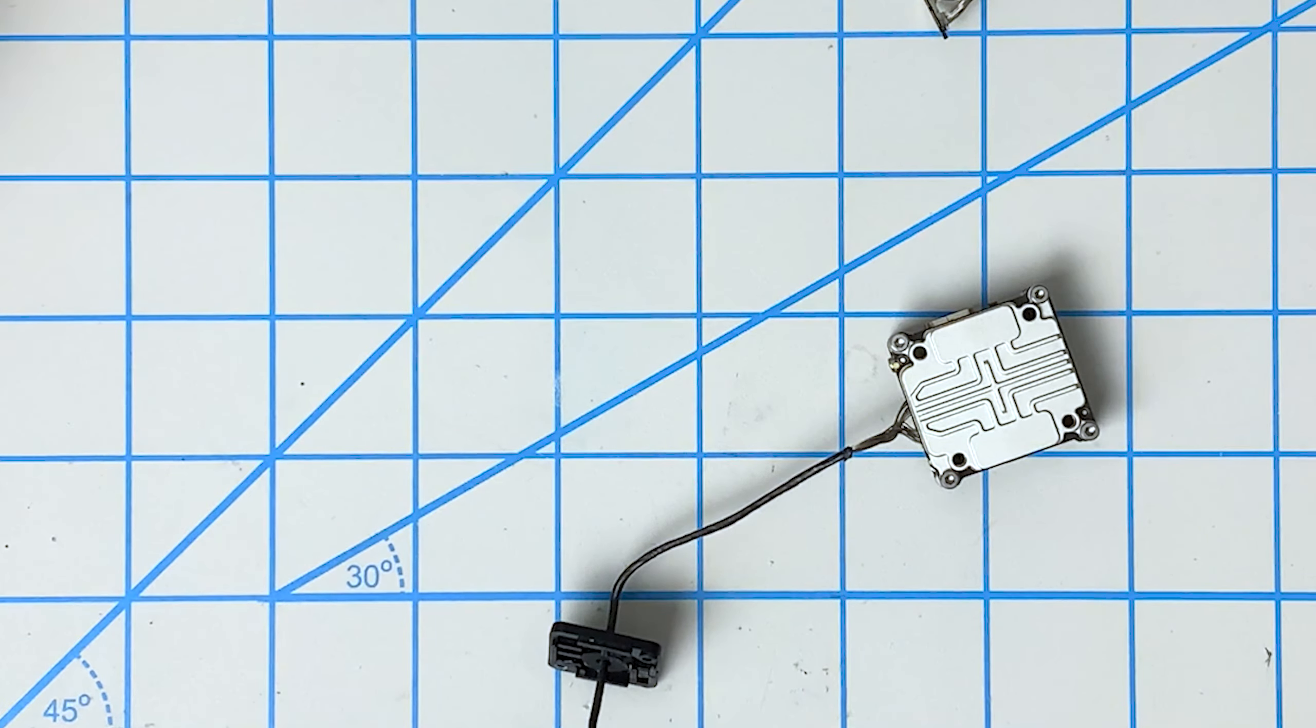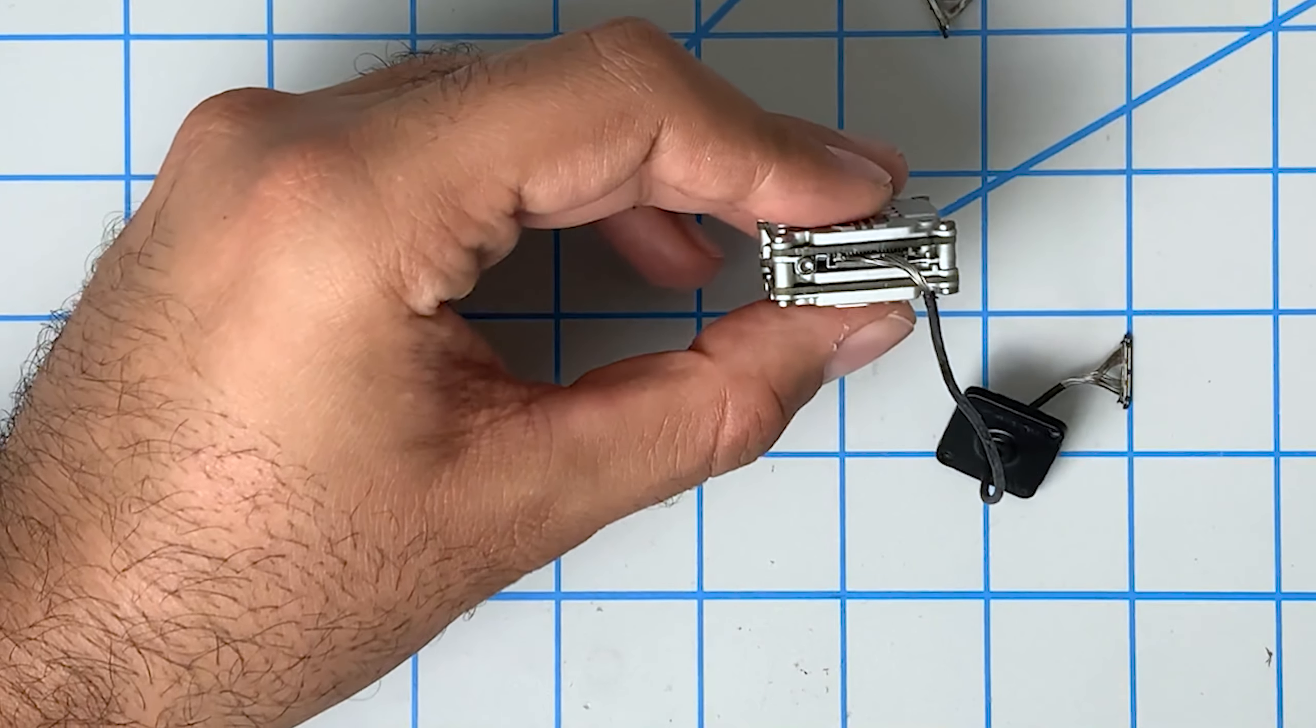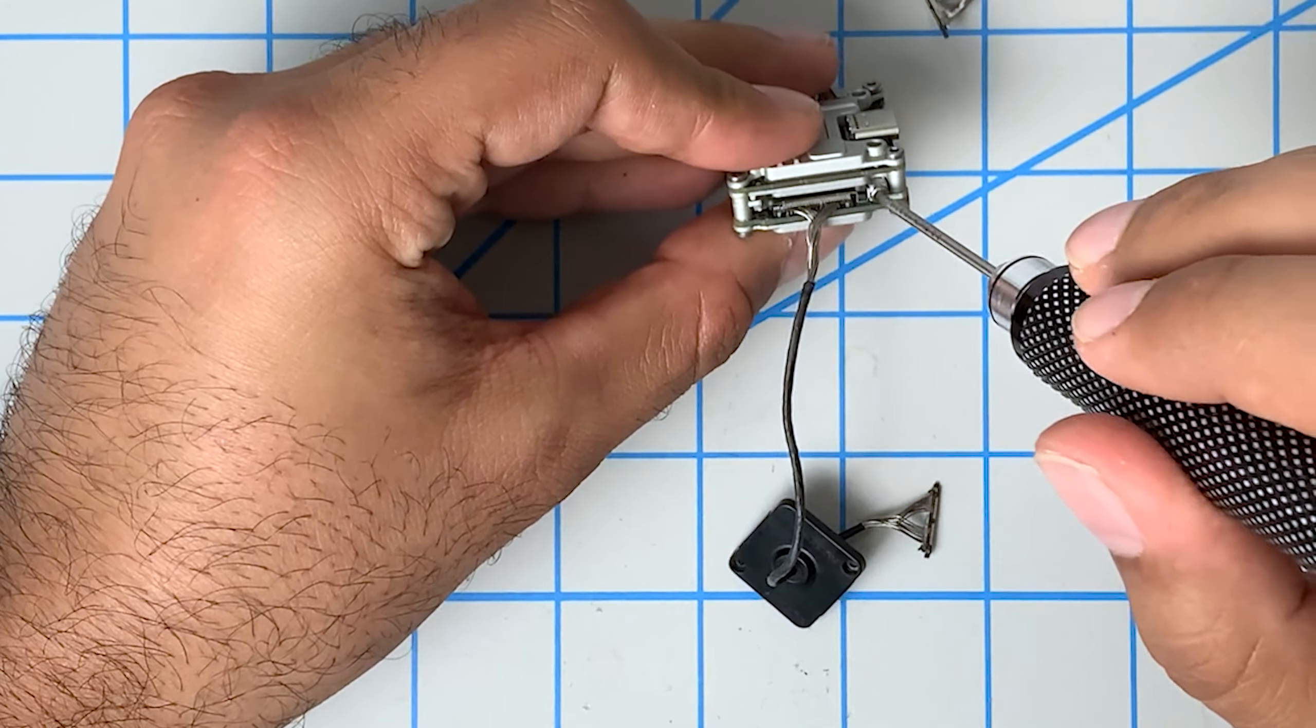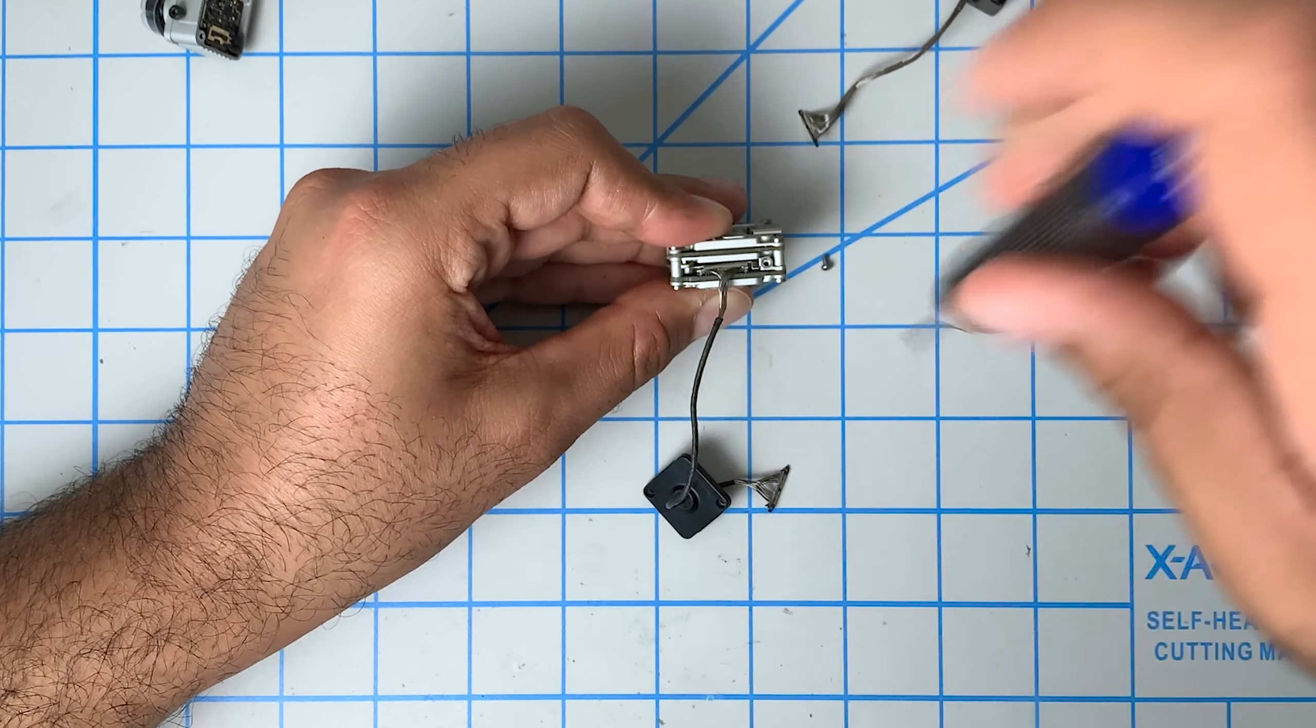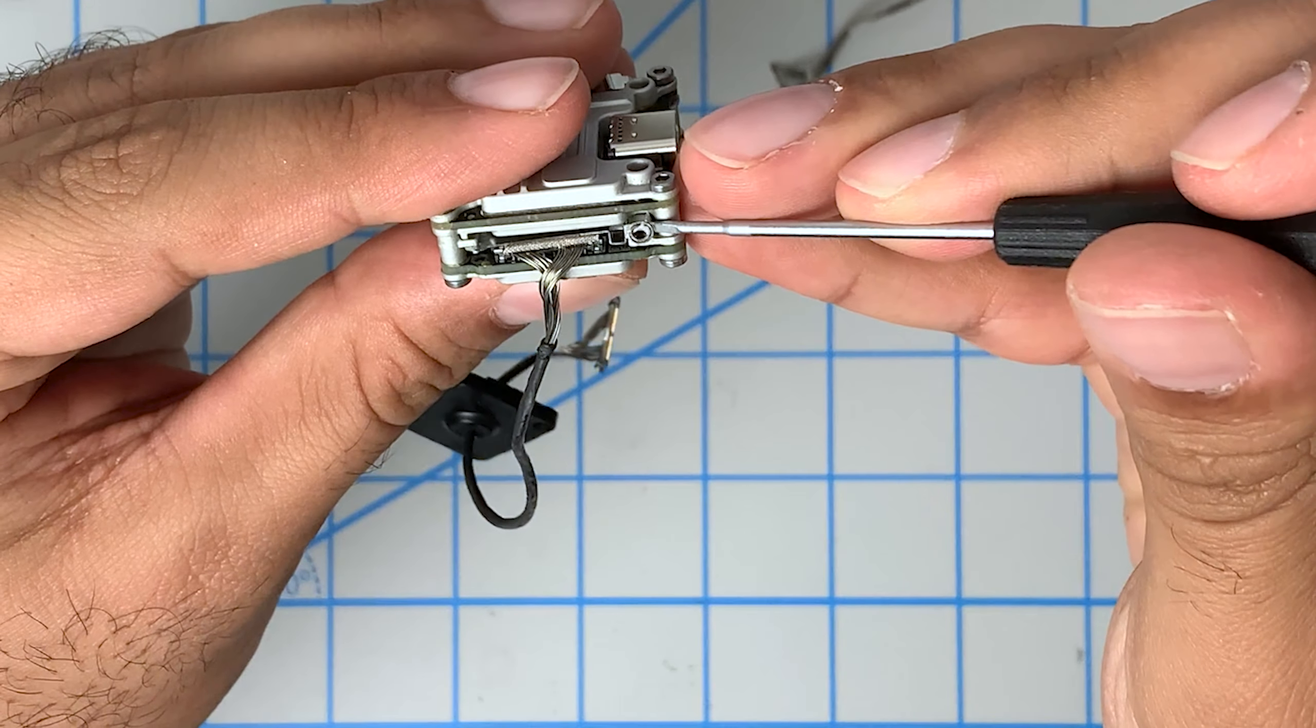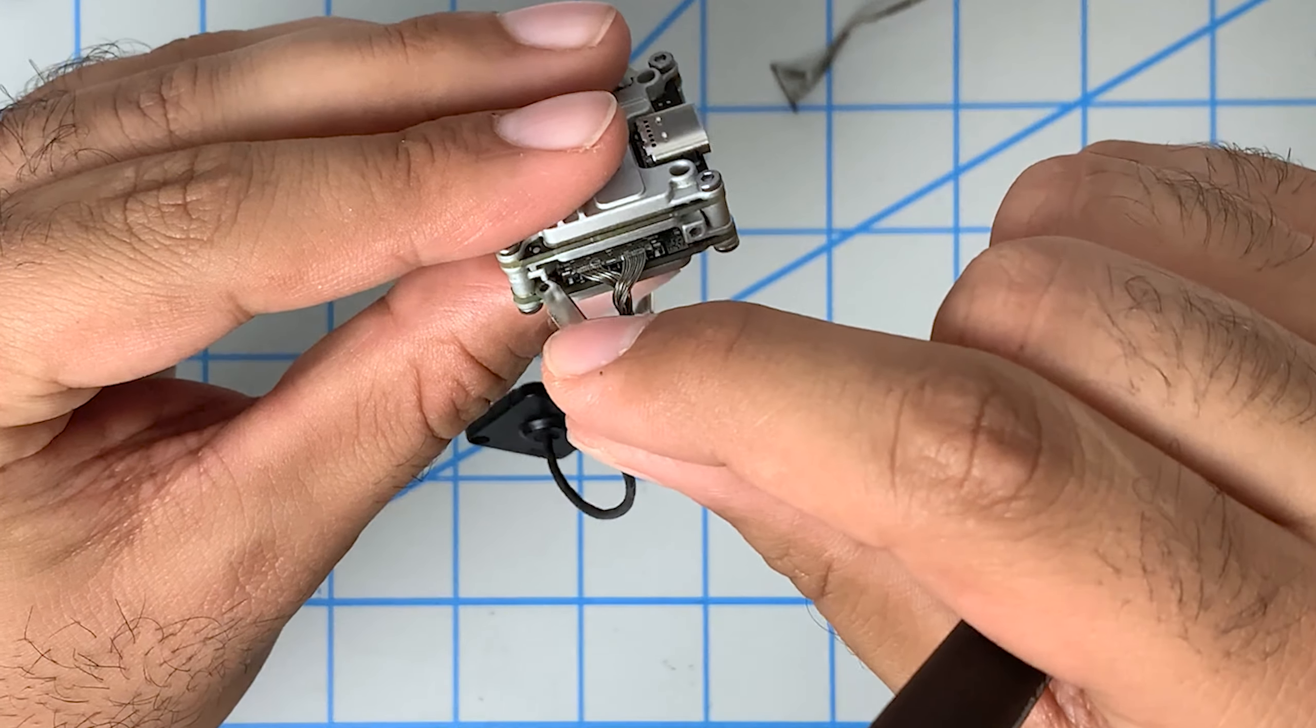Now we'll set the camera aside and we'll move on to the more difficult part of the Vista. So the Vista has the camera cable coming out of the side here. Now we want to remove this small piece of metal covering here. So we'll just get that out of the way.